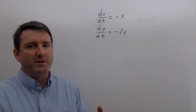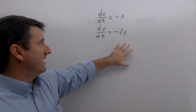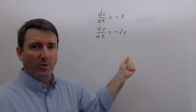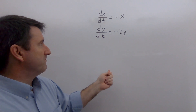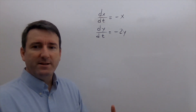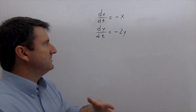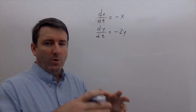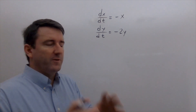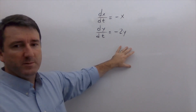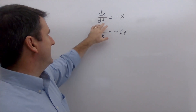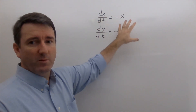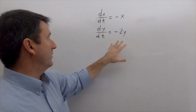In this video I want to do a couple of examples where I take an autonomous system of differential equations, find the critical points for that system, then sketch the direction field in the phase plane, and use that information to determine whether those critical points are stable or unstable. By autonomous system I mean that the independent variable, t, doesn't appear anywhere on the right side of the equations.